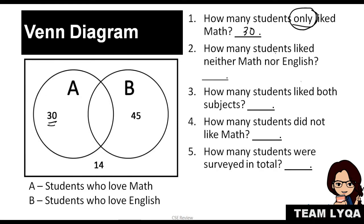Number 2: How many students like neither math nor English? When you say 'neither,' it means 'not either' — ayaw niya ng math, ayaw niya ng English. The people inside the circles are those who like math, English, or both. So the answer — the students who don't want either — is the 14 outside the circles. The answer to number 2 is 14.